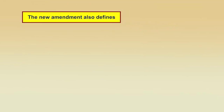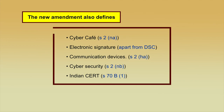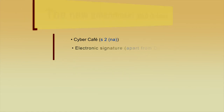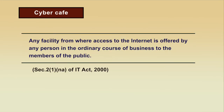The IT Amendment 2008 also adds more definitions. The new amendment defines cyber cafe, electronic signature, communication devices, cyber security, and Indian CERT. Cyber cafe is defined as any facility from where access to the internet is afforded by any person in the ordinary course of business to members of the public — i.e., any public place providing internet access. This is described in section 2(1)(na) of the IT Act 2008.